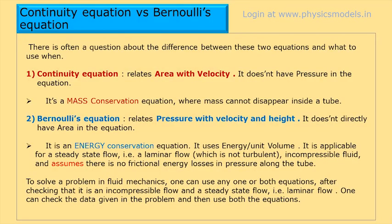I want to touch upon the difference between the continuity equation and Bernoulli's equation, as there can be some confusion. The continuity equation is all about mass flow continuity — it's a mass flow conservation relating area with velocity. Bernoulli's equation is an energy conservation equation that relates pressure with velocity and the height of the tube. Both are different, and both can be used together in a problem provided the liquid is incompressible and is flowing in a steady, laminar state.